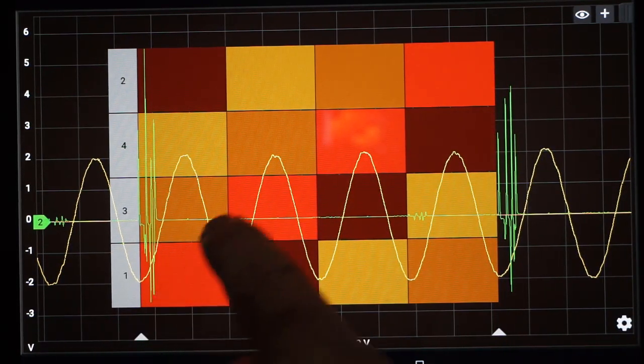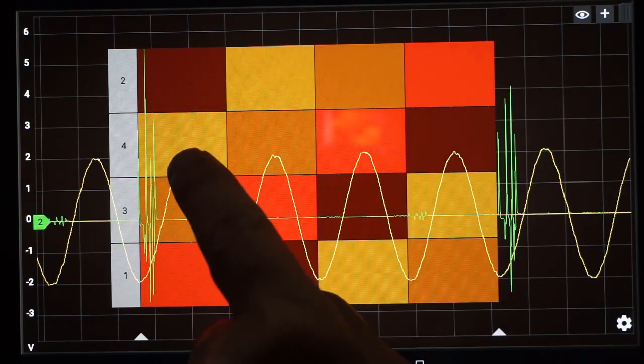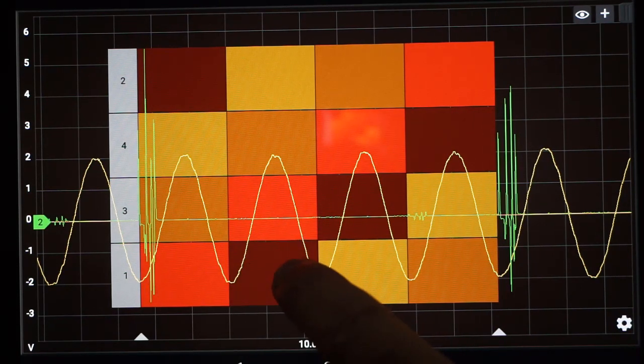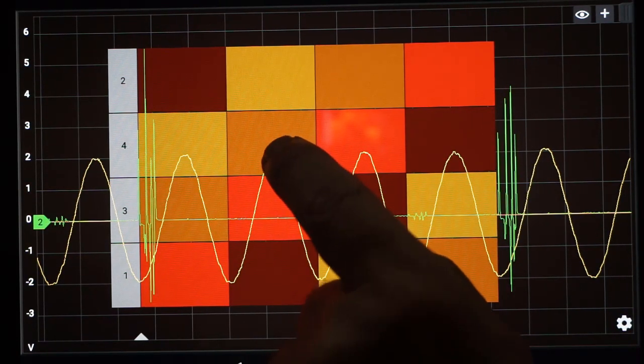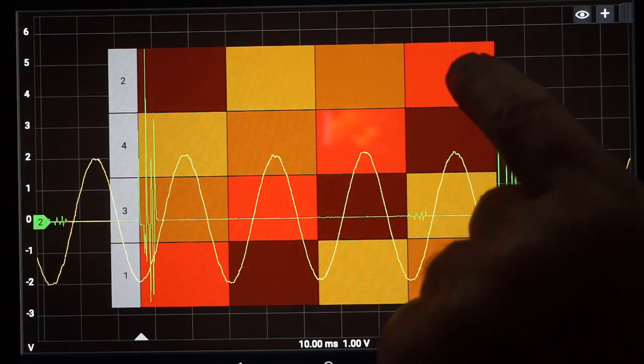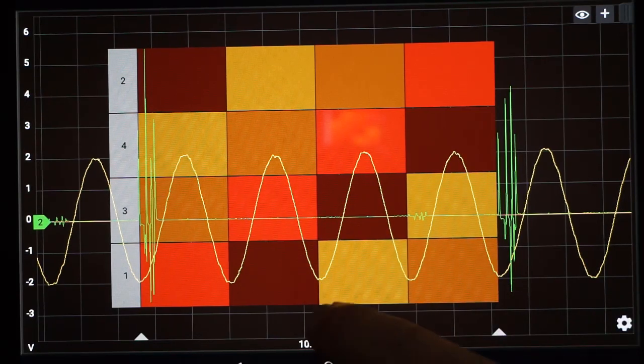In this overlay red means combustion. So on the power stroke here we have a peak for number one cylinder. We have a peak for number three cylinder. We have a peak for number four cylinder. And we have a peak for number two cylinder. This is a good running engine.